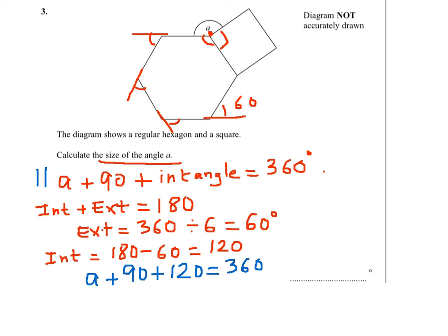And this in turn will give me A equals 150. Remember, the 360 comes from the angles at the point add up to 360, and this is 90, and the interior angle is 120. Therefore A equals 150. Thank you.